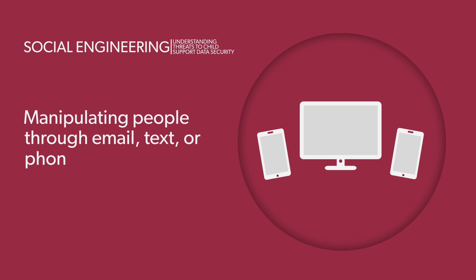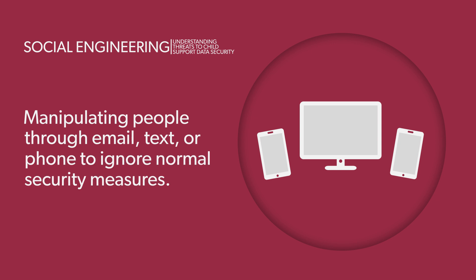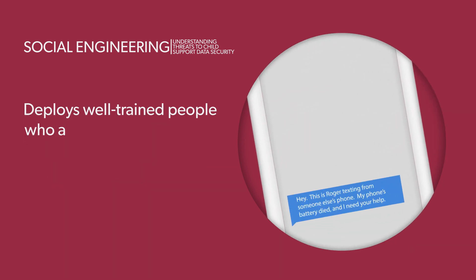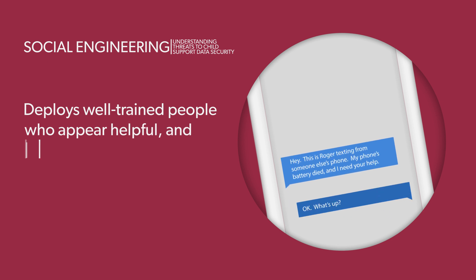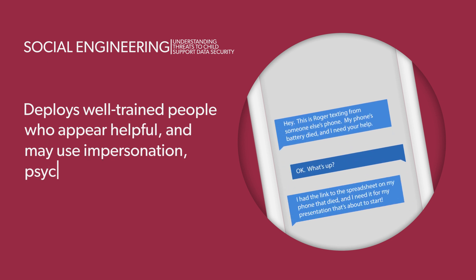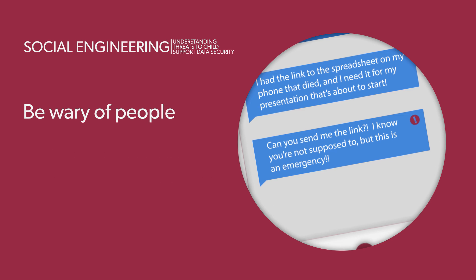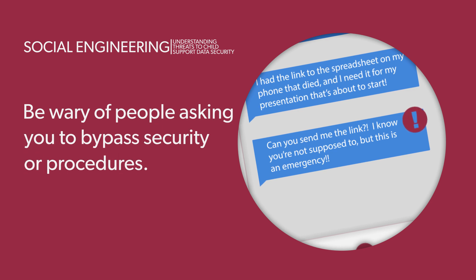Social engineering: social engineering used for fraudulent purposes means manipulating people through email, text, or phone to ignore normal security measures so that they divulge confidential or sensitive information. This technique targets well-trained people who are conditioned to appear helpful, and may use impersonation, psychology, or sales techniques to achieve their goals.